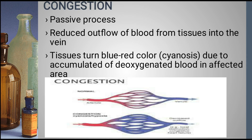Now let's see about congestion. Congestion is a passive process. Congestion occurs due to reduced outflow of blood from the tissue into the vein. The blood that flows out from the tissue into the vein is deoxygenated blood. So when the outflow of deoxygenated blood into the vein is reduced, the tissue turns a blue-red color — that is, cyanosis is caused as the deoxygenated blood gets accumulated in the tissues.